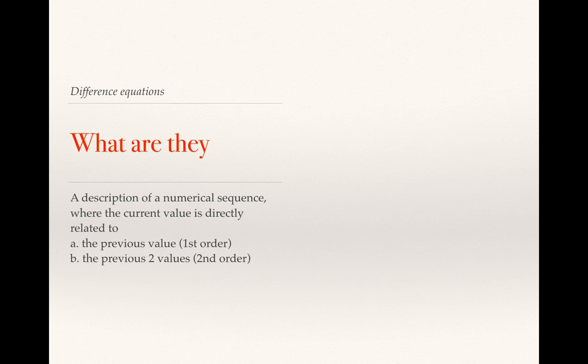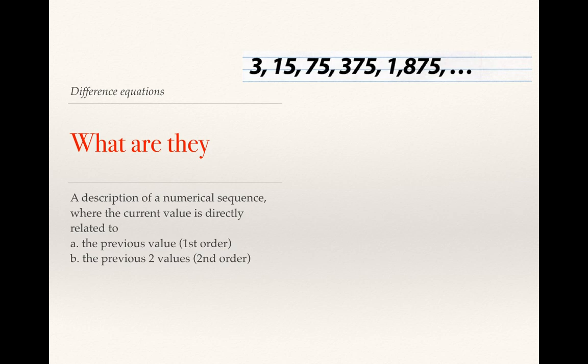An example of a first order difference equation would be something like that, and you can see that 3 when multiplied by 5 will give me 15, 15 by 5 gives me 75, and so on. So any term in that can be described as 5 times the previous value. The current term is a multiple of just the previous term, so it's a first order difference equation.